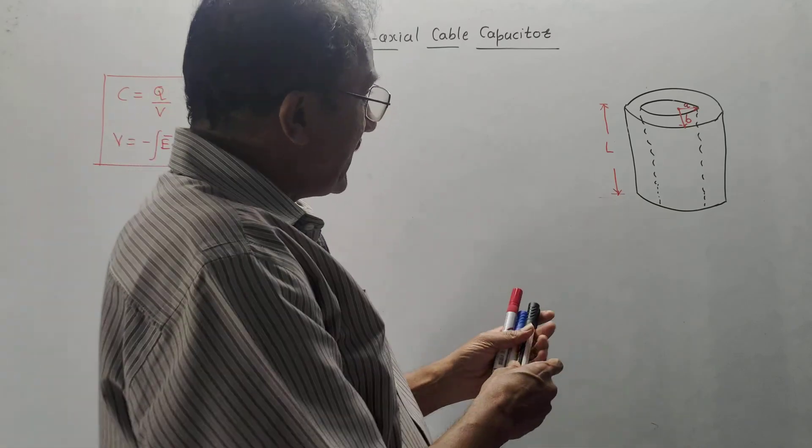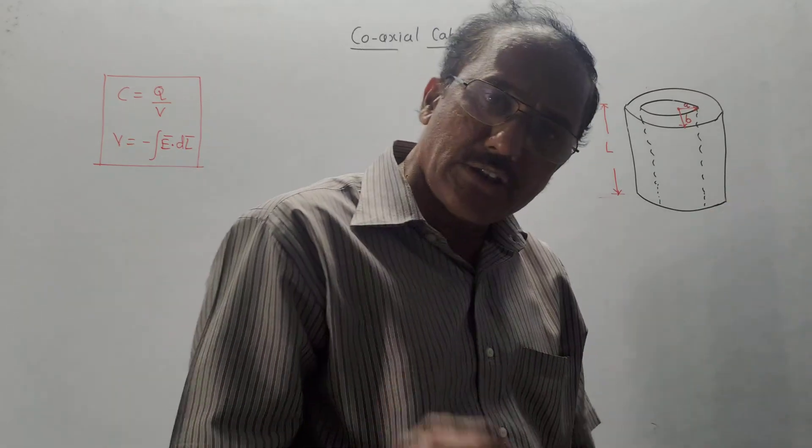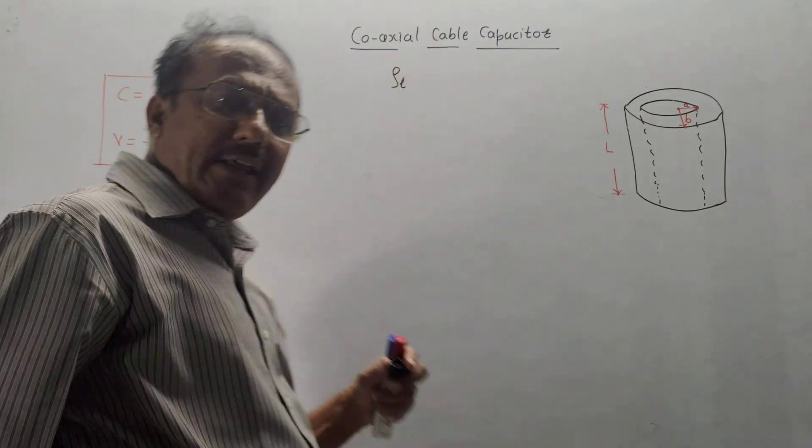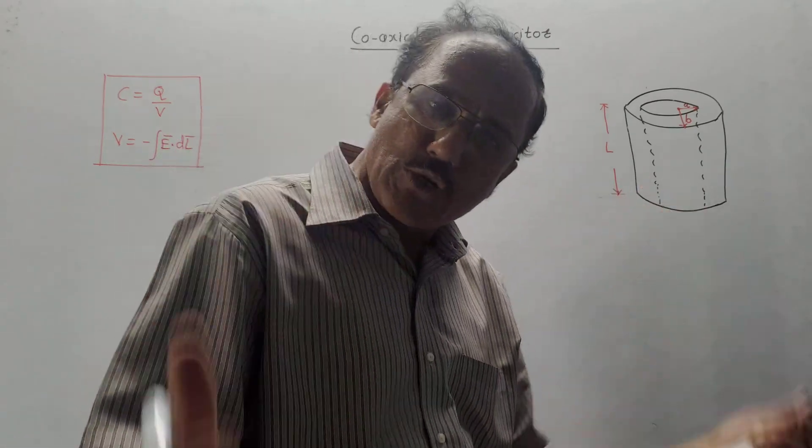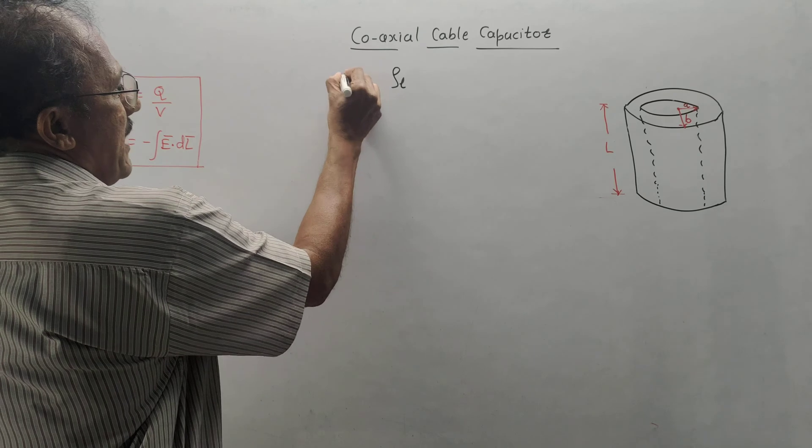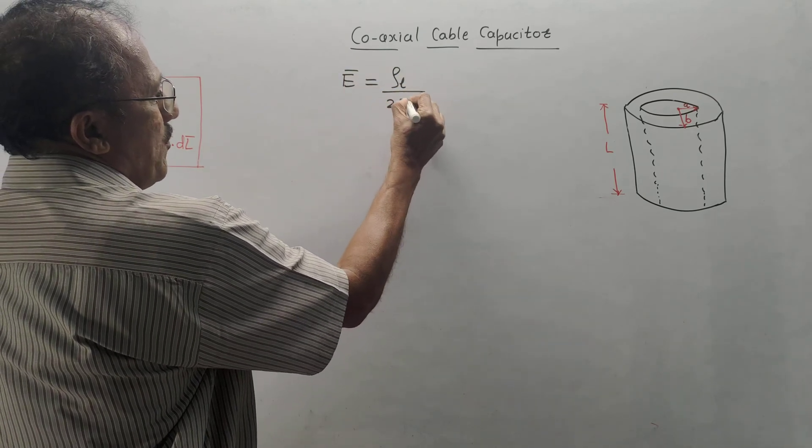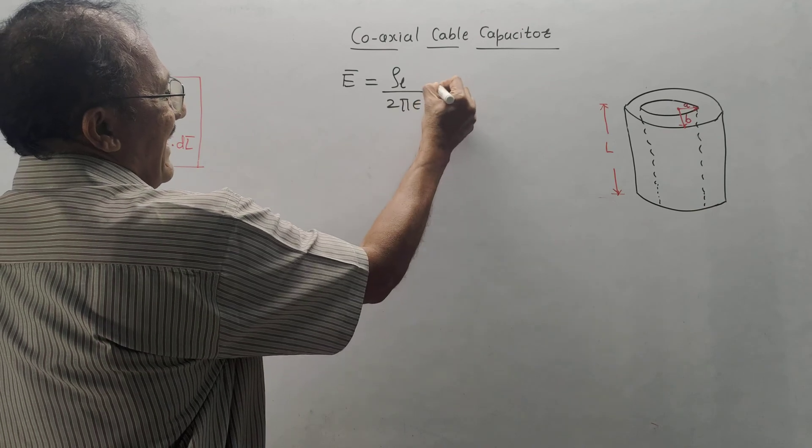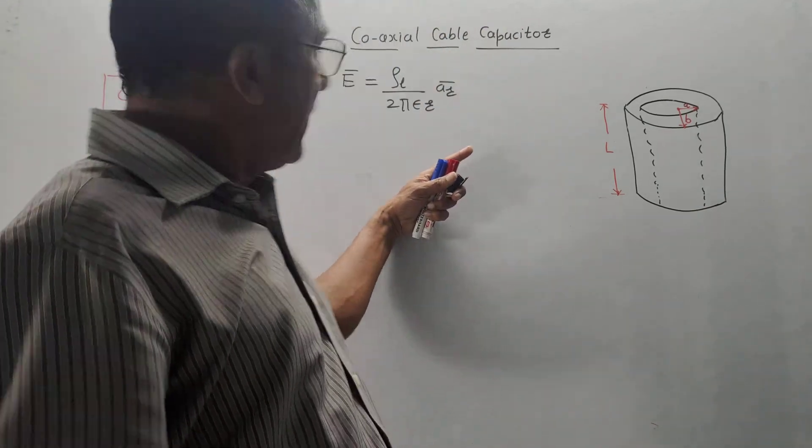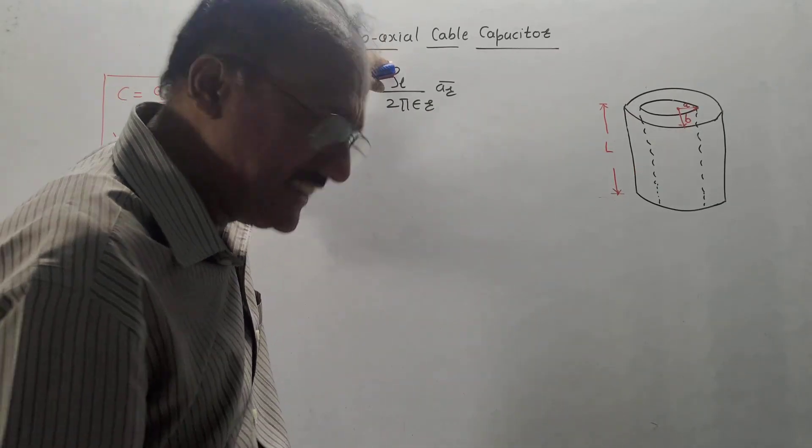This derivation is related to the coaxial cable capacitor, so we must include the notation rho L because rho L is line charge distribution. The derivation starts with equation of e bar in terms of rho L, which is e bar is rho L upon 2 pi epsilon R a R bar. It is the derivation of electric field intensity in terms of line charge density.